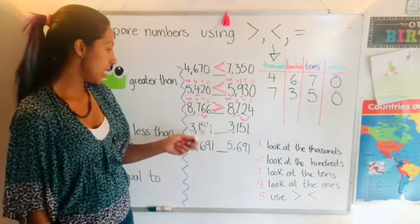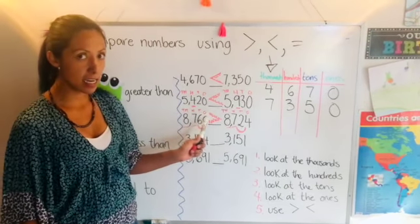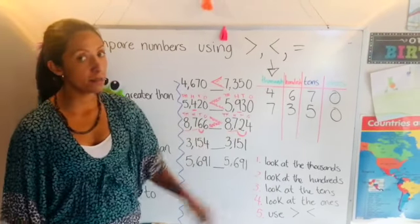Now we say eight thousand seven hundred and sixty-six is greater than eight thousand seven hundred and twenty-four.